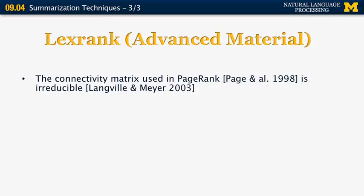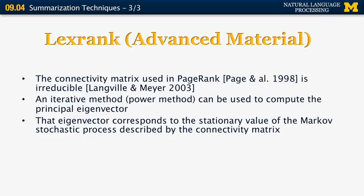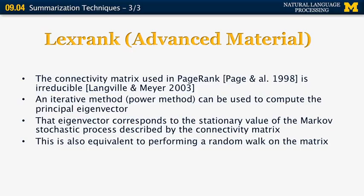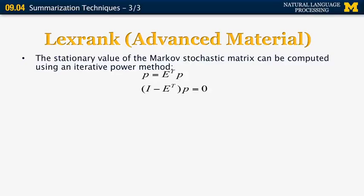So the connectivity matrix in this kind of setup is similar to the one that is used in PageRank for document ranking. That's the system behind Google. And it's also known to be reducible. So one can use an iterative power method to compute the principal eigenvector for pretty much arbitrarily large matrices. So that eigenvector corresponds to the stationary value of the Markov stochastic process described by the connectivity matrix. Essentially a random walk over the nodes of the matrix in proportion to the weights of the edges.